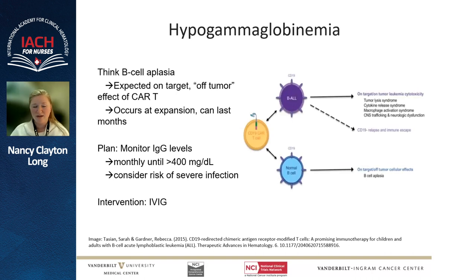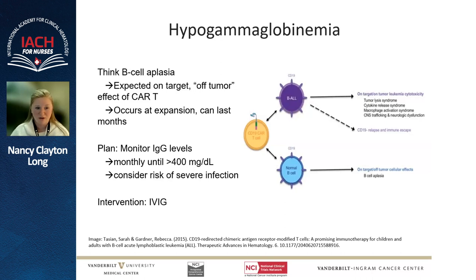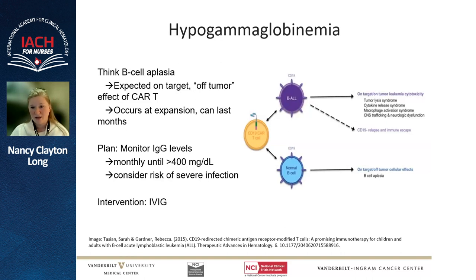Another important long-term complication is hypogammaglobulinemia. B-cell aplasia occurs because those healthy cells look similar to the lymphoma or disease cells, and the CAR-T cells will also eliminate them — an on-target but off-tumor effect. This often occurs during expansion and can last for months. Monitor IgG levels in your clinic. Patients typically get IVIG infusions monthly until IgG level is above 400. If patients are having lots of infections, they may need more frequent IVIG — an important clinical decision made with your team.